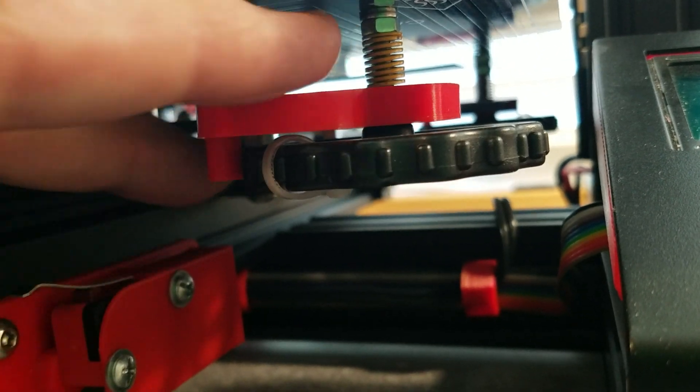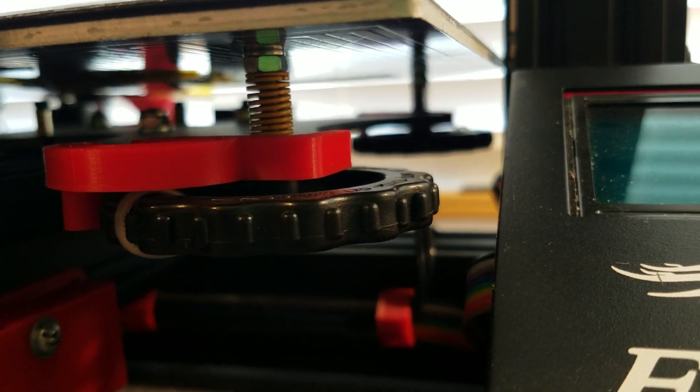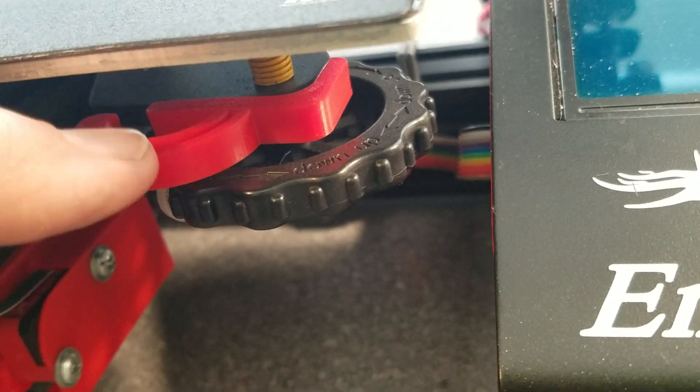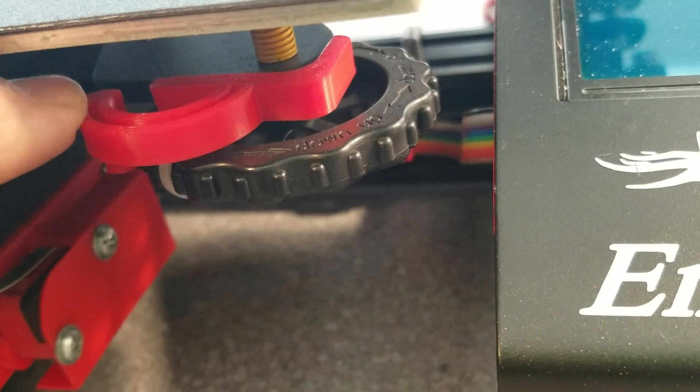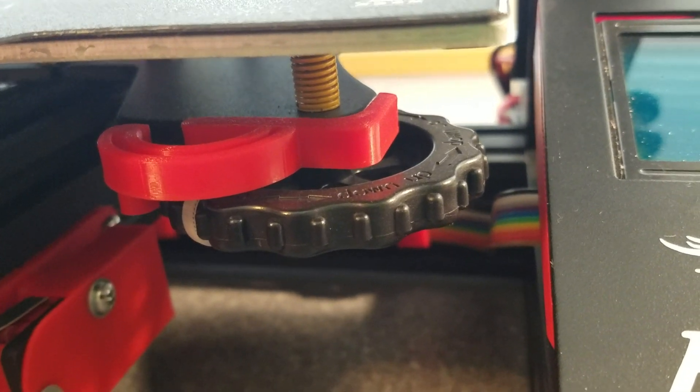I didn't have to take the bed off, but it will make it easier. And then a printed adjusting wheel lock that I got from Kultz, but I think you can get it on Thingiverse too. If I can find it, I will put a link in the description.